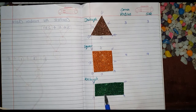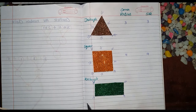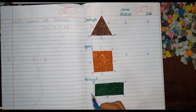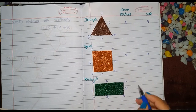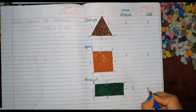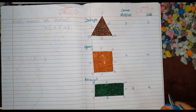What shape is that? It is a rectangle. How many corners does a rectangle have? 1, 2, 3, 4. How many sides does a rectangle have? 1, 2, 3, 4. So we can write corners: 4 and sides: 4.